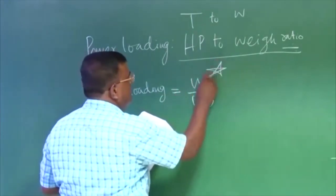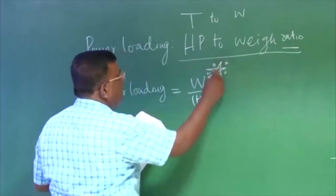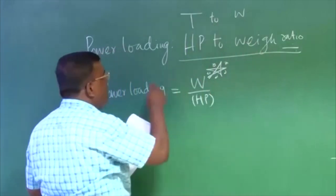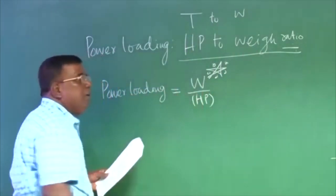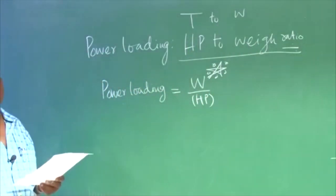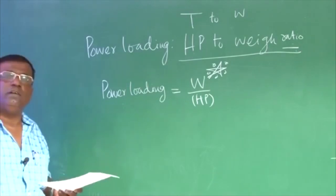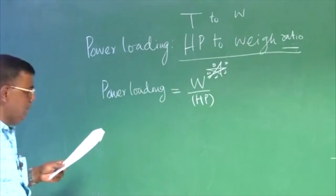You must note that, otherwise you may commit mistakes. So in actual practice, power loading is defined in a reverse manner, W by horsepower. What is this? This is important. What mind says T by W, so horsepower to weight, but actually it is defined as W by horsepower, inverse of what comes to our mind when you just extend the concept of thrust to weight ratio. This is important, you should understand.